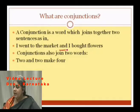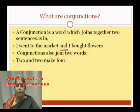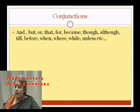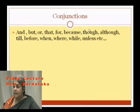Conjunctions also join two words. For example, 'two and two make four.' The list of conjunctions are: and, but, or, that, for, because, though, although, till, before, when, where, while, unless, etc.